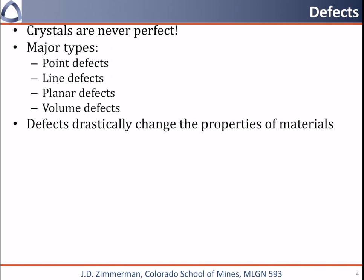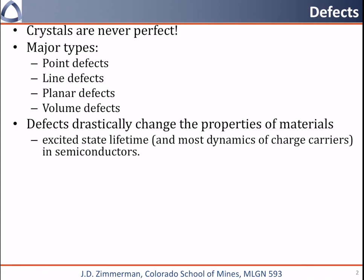Defects drastically change many of the properties of materials. First would be excited state lifetimes in semiconductors. If you want to make a good solar cell, you need to have a really long excited state lifetime — you want those excited states to stick around as long as possible. So you get rid of as many defects as possible. When you buy a solar grade silicon wafer, that company has gone to extraordinary efforts to eliminate defects. But when you process it into a device, you add defects into the semiconductor to modify its conductivity — you might make parts of it N-type, parts of it P-type. Then you'll probably go to additional efforts to passivate other defects like the surfaces.